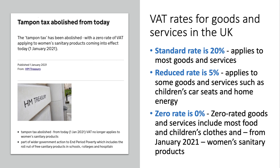Books and magazines are also zero-rated. From January 2021, the government scrapped VAT on women's sanitary products — the abolition of the so-called tampon tax. When inside the EU, the essence of it was that you couldn't cut that tax to less than 5%. The UK has now cut it to zero.